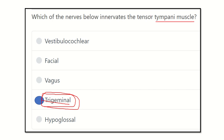In summary, the tensor tympani muscle is present in the middle ear cavity, attaches to the neck of the malleus and the Eustachian tube, and is innervated by the mandibular division of the trigeminal nerve — that is, the third division of the trigeminal nerve — which supplies the tensor tympani muscle in the middle ear cavity.